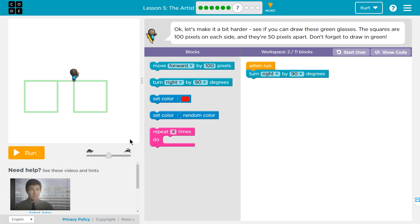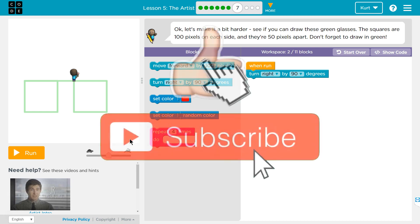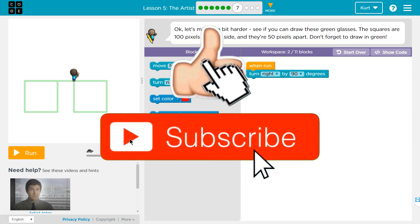Let's see. Okay, let's make it a bit harder. Perfect. See if you can draw the green glasses. The squares are 100 pixels on each side, alright, and they're 50 pixels apart. Don't forget to draw in green.